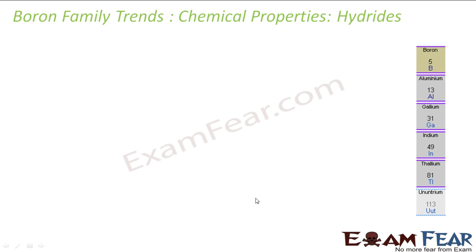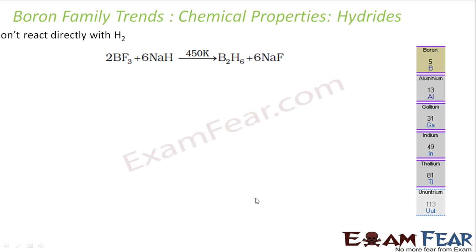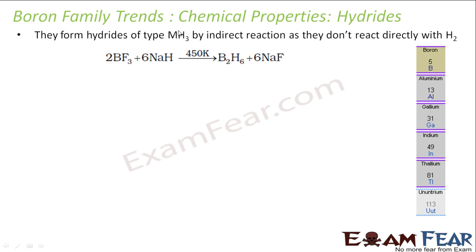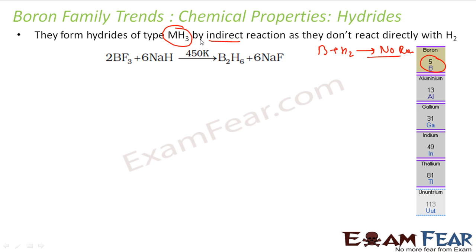Boron typically does not react with hydrogen directly, but hydrides can be formed by indirect reaction. For example, boron halide (boron fluoride) reacted with sodium hydride or similar gives B2H6. Boron hydrides are called boranes. B2H6 is the simplest boron hydride, and it is pretty unstable.